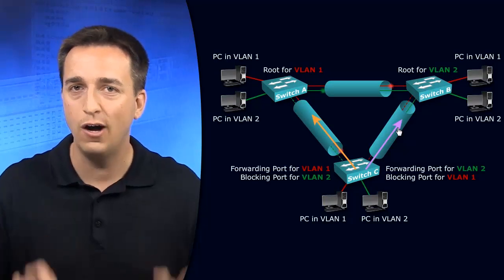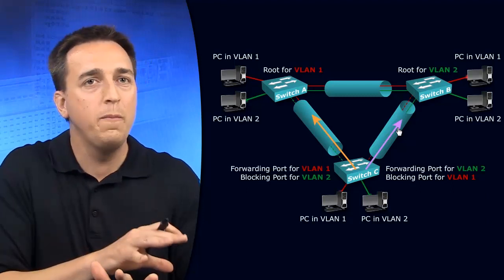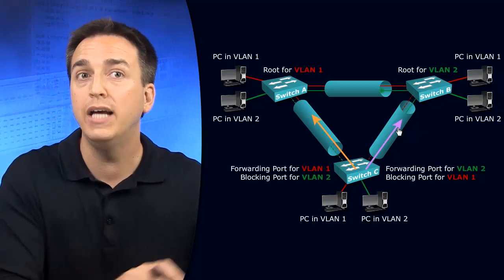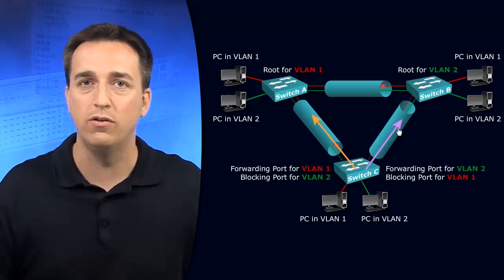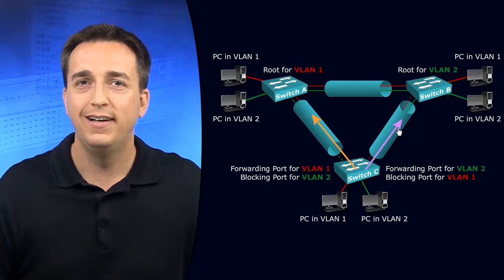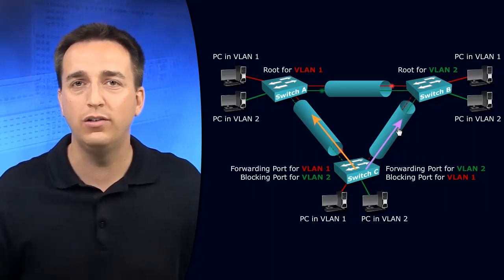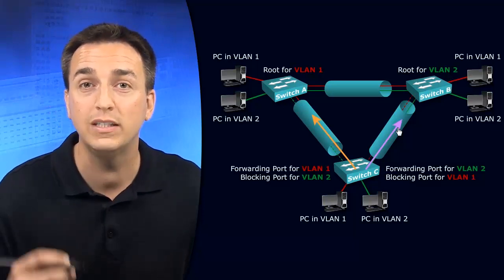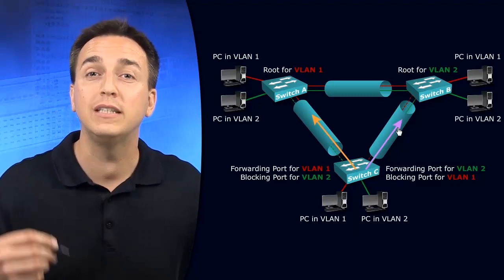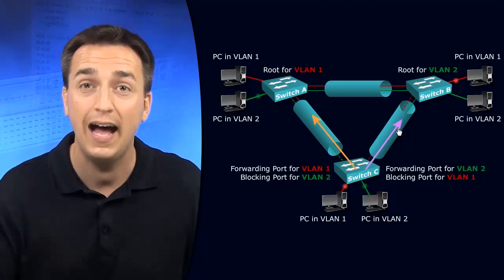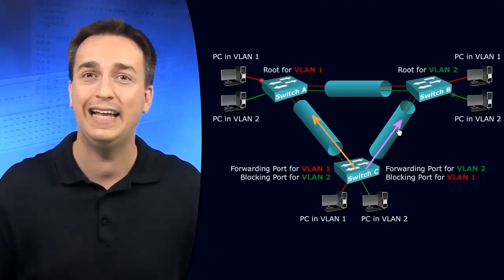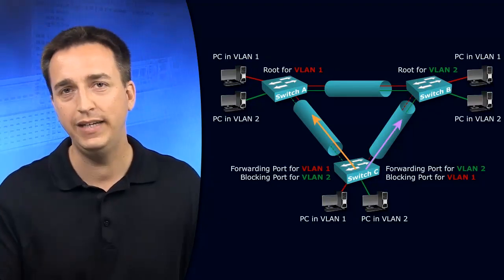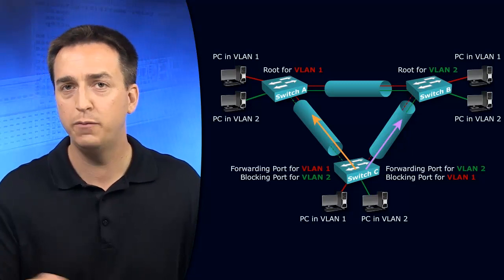So how is this accomplished? How do the switches know which BPDU is for which VLAN? How do they know how to build the topology and not get BPDUs confused? There's going to be a separate BPDU sent out of every single interface for every single Spanning Tree instance that is tied to a VLAN, so we need a way to identify the VLAN in the BPDU.